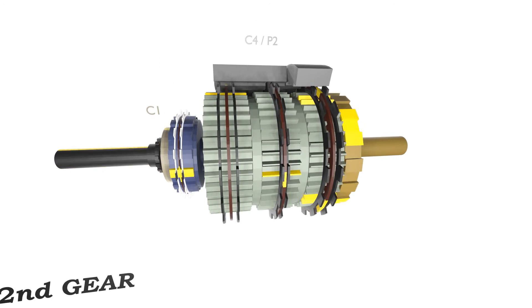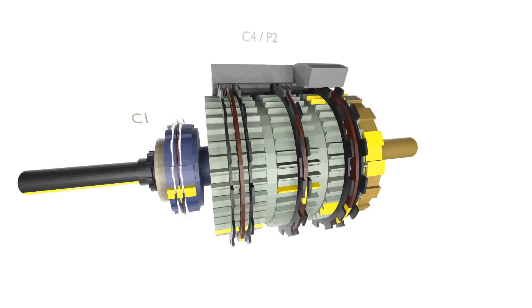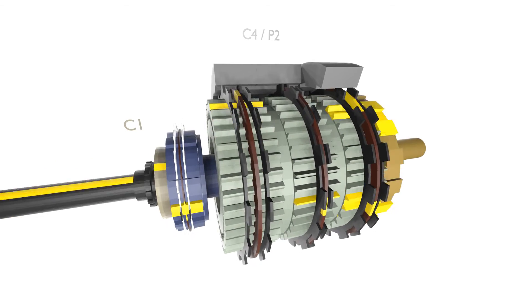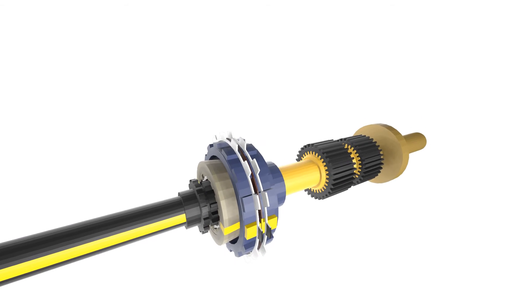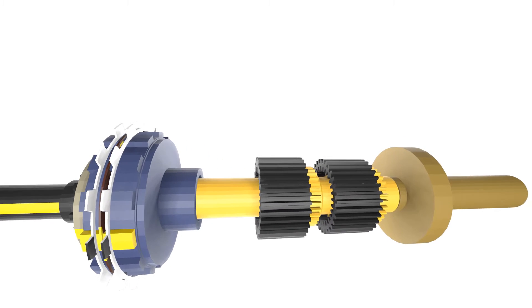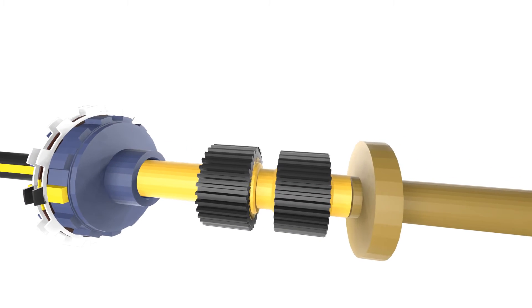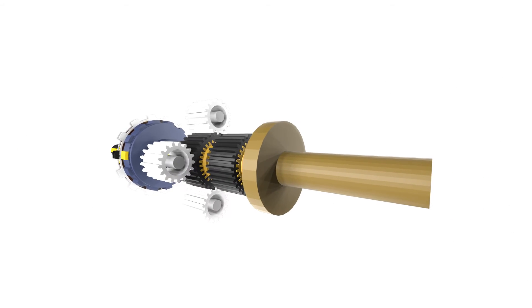C1 is already engaged so no changes apply here. It will continue to rotate now with C4 engaged. Notice that the sun gear of P2 and P3 are splined to the intermediate shaft. This allows for different gear ratios to deliver different speeds.